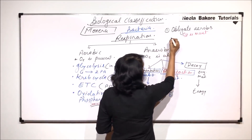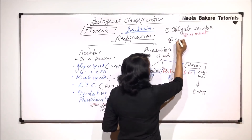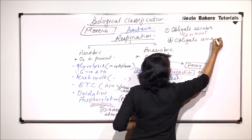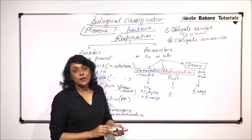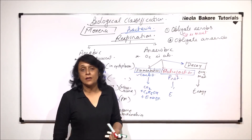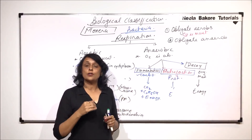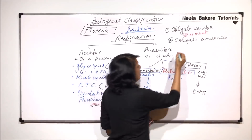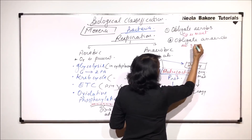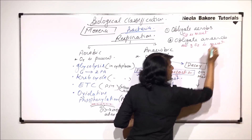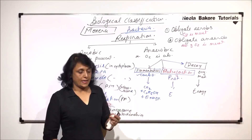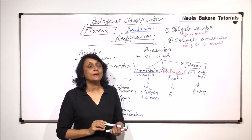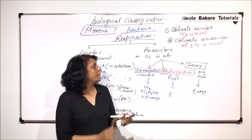The second term is obligate anaerobes. This means the absence of oxygen is a must condition — if oxygen is present, they would not survive. They can survive only in anaerobic conditions, and oxygen is going to act as a poison for them.